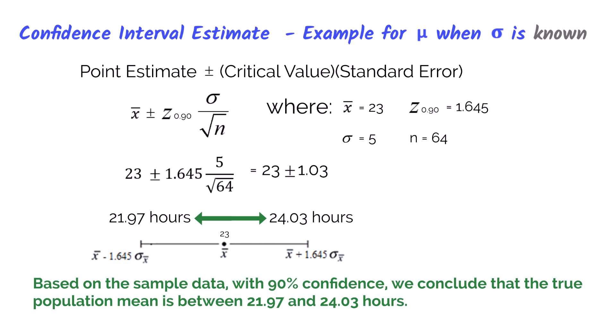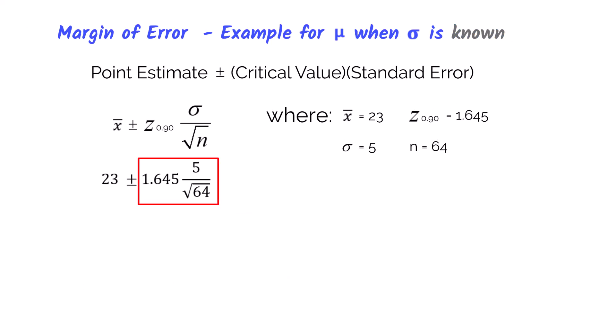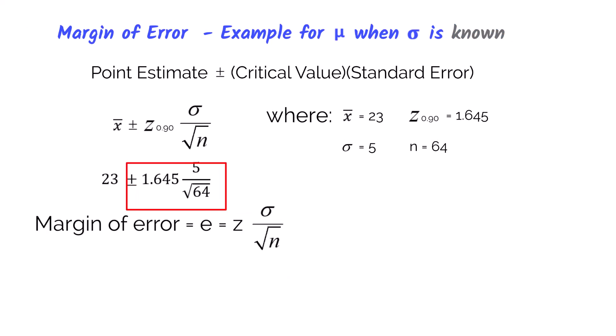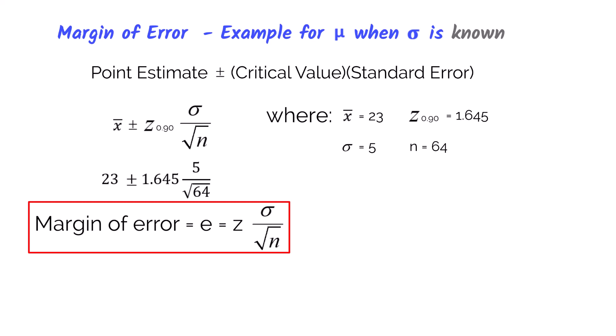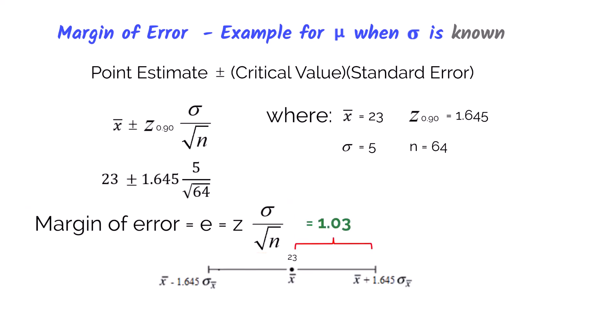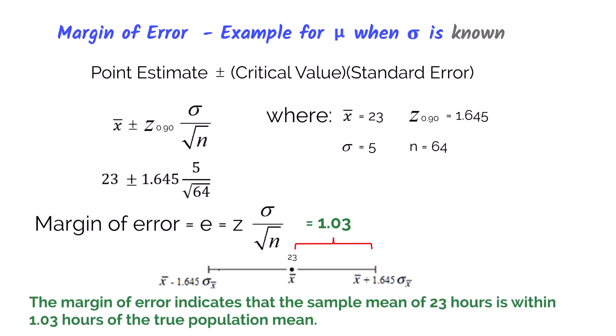Because we're using a sample to estimate the true population mean, we wouldn't give a decision maker an exact value. Instead, we give them an interval estimate, because point estimates are prone to sampling error. The critical z-value times the standard error — to the right of the plus or minus sign — is known as the margin of error. You may have heard this term with election polls, where pollsters estimate how many people will vote for a candidate plus or minus the margin of error. The margin of error is half of the interval, indicating the sample mean of 23 hours is within 1.03 hours of the true population mean.